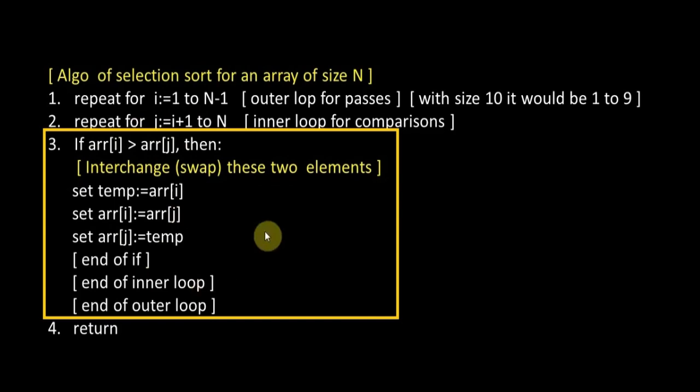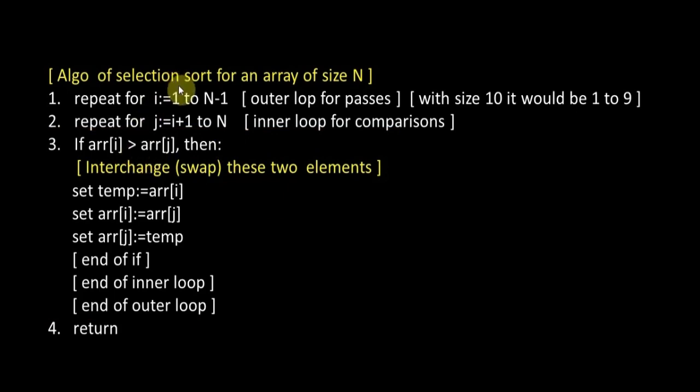As you can see from this logic, and as you already know, in Selection Sort in each successive pass we keep leaving out the upper element. The first time when the value of j was 2, arr[1] was compared with arr[2].